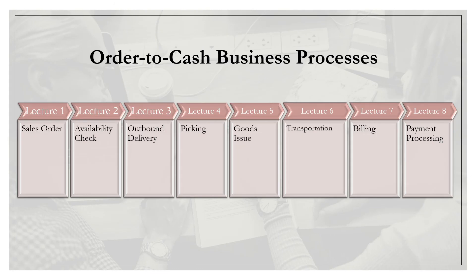So we are done with the order-to-cash business process — one third of this lecture. To recap: first we started with sales order creation, then the system checked product availability. Third, an outbound delivery document was created; with that came a transfer order to pick and pack the goods, then we posted goods issue. Then transportation happened and we sent the bill — billing was created by the logistics side, the invoice was created and sent to the customer by the accounting department, and then once the customer sent in the payment, the accounting department processed it.